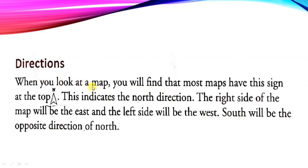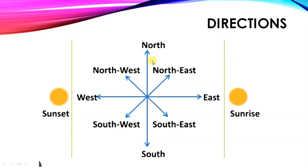Directions. When you look at a map, you will find that most maps have this sign at the top. This sign indicates the north direction. The right side of the map will be the east and the left side will be the west. South will be the opposite direction of the north. Every map has this type of sign. This indicates north direction. If we find any direction, another direction we can find easily. The right hand side should be east and left hand side should be west. Opposite of north will be south. This is the picture of directions. You can see here north opposite south, east opposite west is there. Some directions are inside these directions. These are known as intermediate directions.